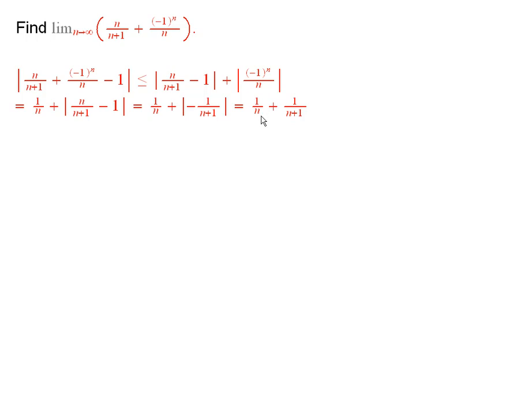And I know that as n gets large, 1 over n and 1 over n plus 1 both approach 0. So by the squeezing theorem, the limit of the absolute value here is equal to 0. And that is exactly what we mean when we say that the limit of this is equal to 1.